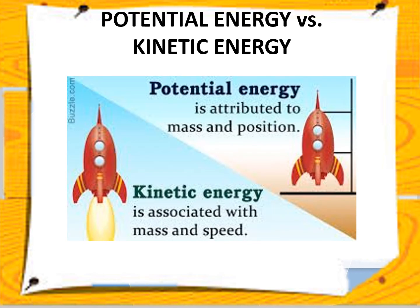Remember this: potential energy is always attributed to mass and position, or simply mass and height — that is why the formula is PE equals mgh. However, for kinetic energy, this is associated with mass and speed, and the formula is KE equals mv squared divided by 2.